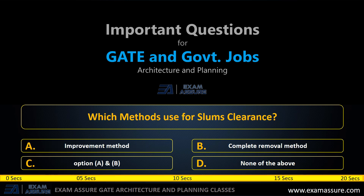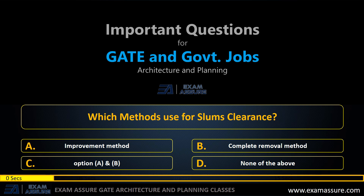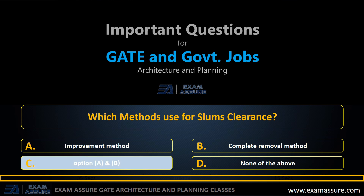Which method is used for slum clearance? Option A: Improvement method. Option B: Complete removal method. Option C: Both A and B. Option D: None of the above. The correct answer is: Both A and B — that is, Improvement method and Complete removal method.